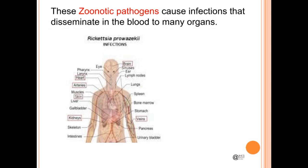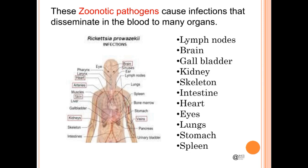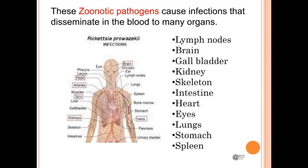These zoonotic pathogens cause infections that disseminate in the blood to many organs, infecting many organs including lymph nodes, brain, gallbladder, kidney, skeleton, intestine, heart, eyes, lungs, stomach and spleen.